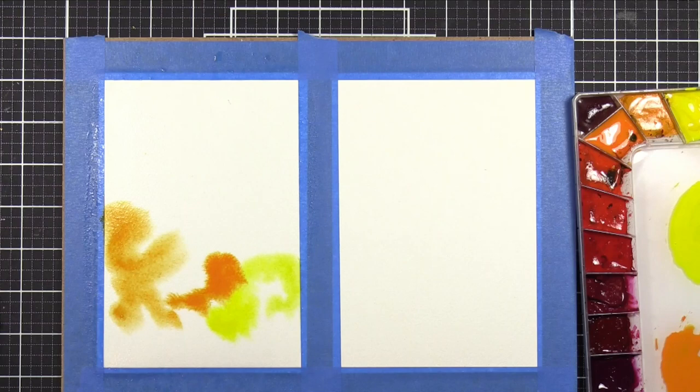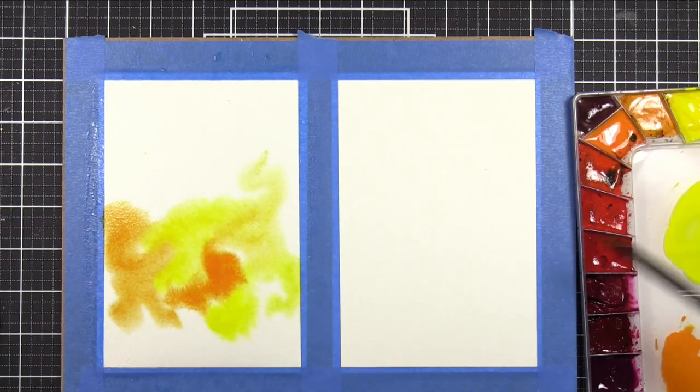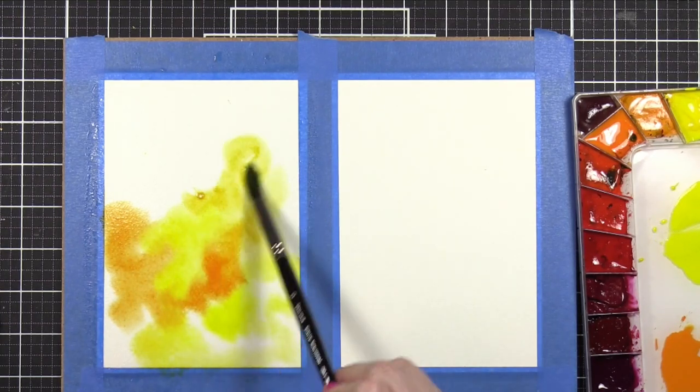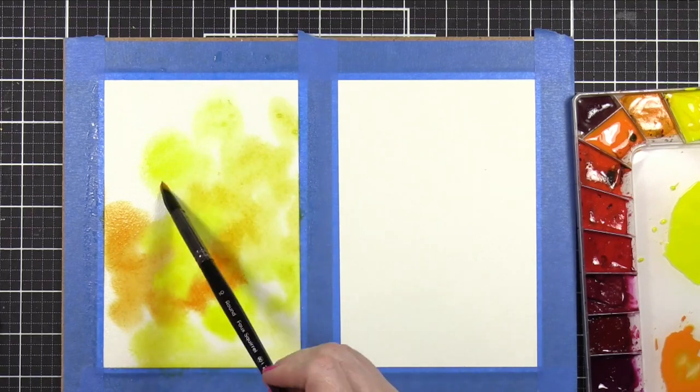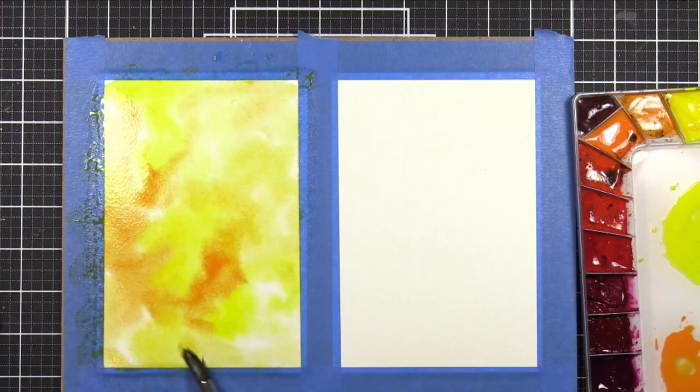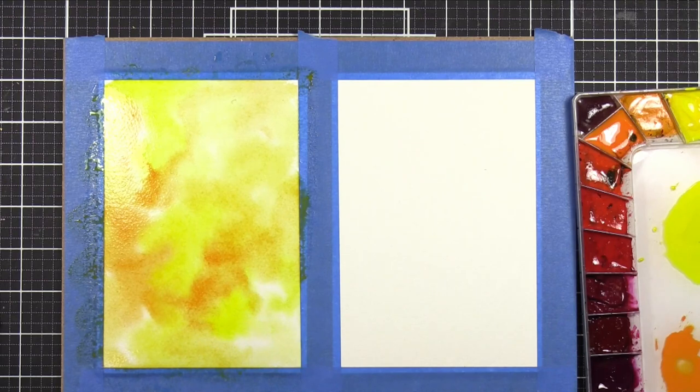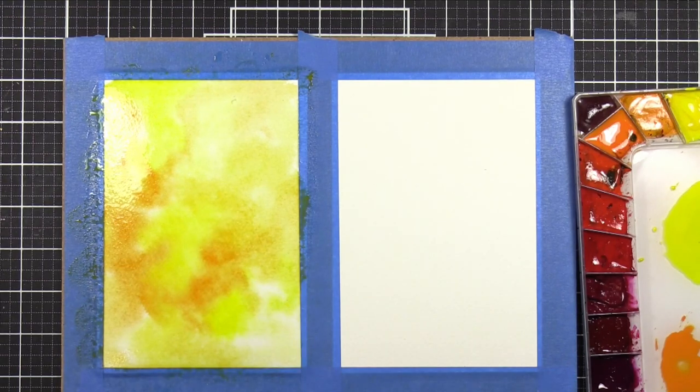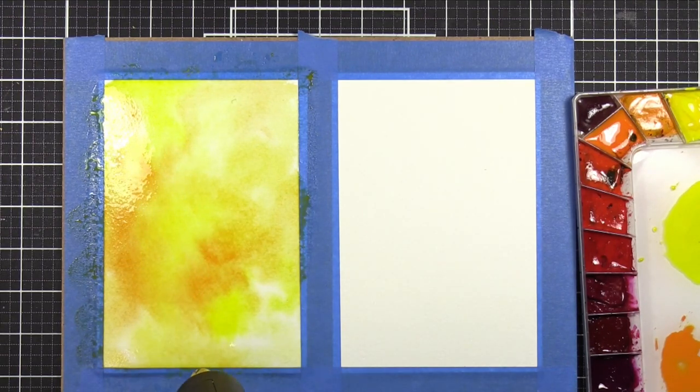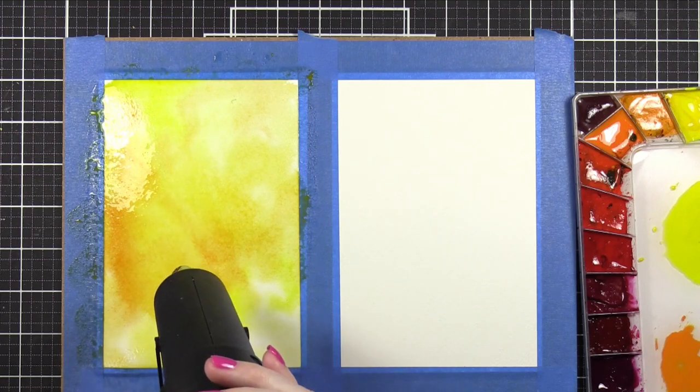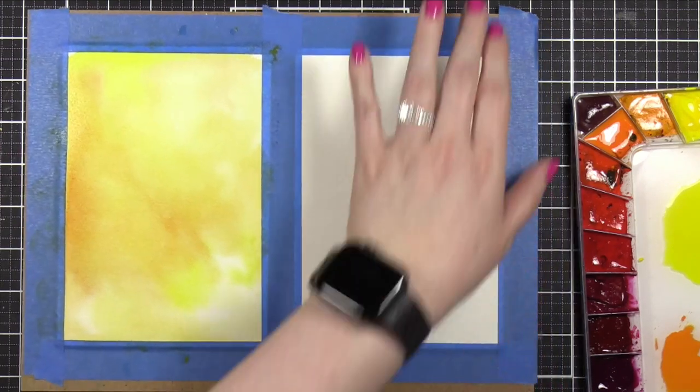I've sped up the video so I can get through this a little bit faster, but basically I'm just putting a mix of the orange and the yellow and making sure I cover the entire area. The colors weren't spreading as much as I wanted, so I spritzed it with a water bottle and then used my heat tool to speed along the drying process. Super easy background.